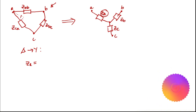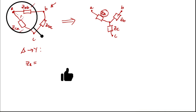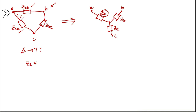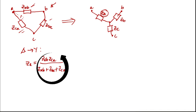To get Za from this delta connection — Za is connected here, and the other branches connected at this point in the delta connection are Zab and Zca. So we multiply those branches: Zab multiplied by Zca, and then we divide by the sum of all impedances.